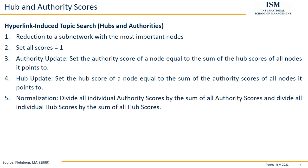Once we've done this, we normalize all the scores. We divide all individual authority scores by the sum of all authority scores, meaning the maximum any authority score can reach is one — but only if there's one node with all the authority and all others are zero. We do the same for hub scores, then start again from step three: authority update, hub update, and normalization. We continue until a cancellation criterion is met — until changes in the scores are below a certain threshold or a certain number of iterations have passed.